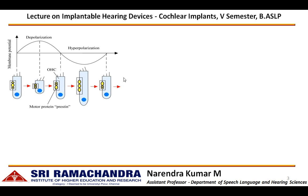Smaller deflections of the basilar membrane can be easily detected by the outer hair cells. When the outer hair cells are activated, rather than producing neural impulses, they change their shape because of a motor protein called prestin present on their cell body. This is called electromotility of the outer hair cells.